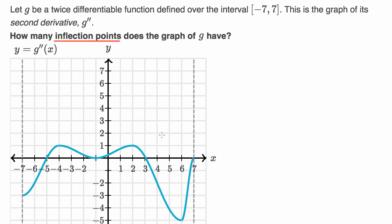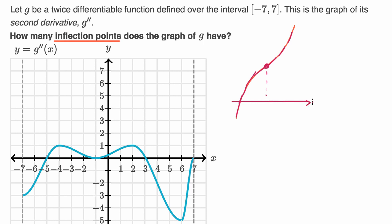Let's remind ourselves what an inflection point is. That is when we go from being concave downwards to concave upwards. Another way to think about it: it's a point where our slope goes from decreasing to increasing. The slope is decreasing, then all of a sudden it starts increasing again. That x value would be an inflection point.